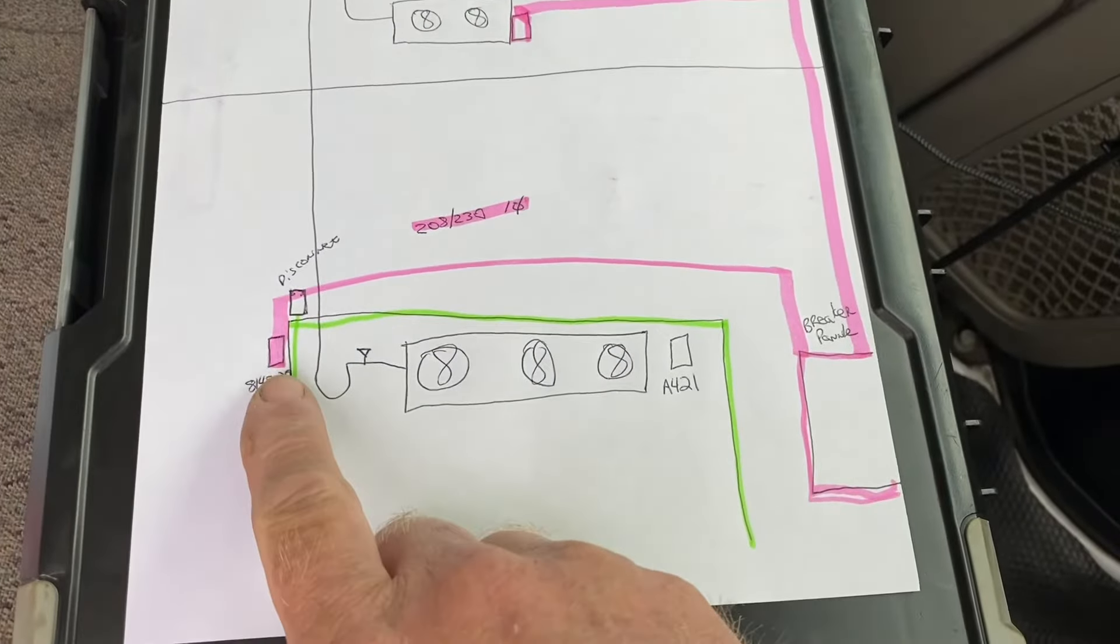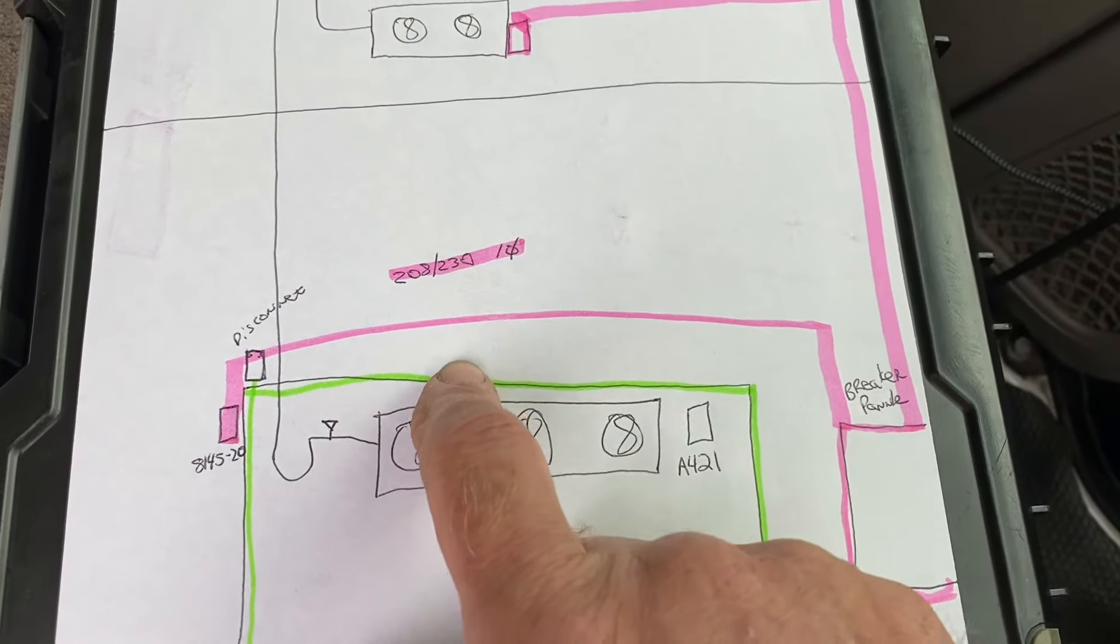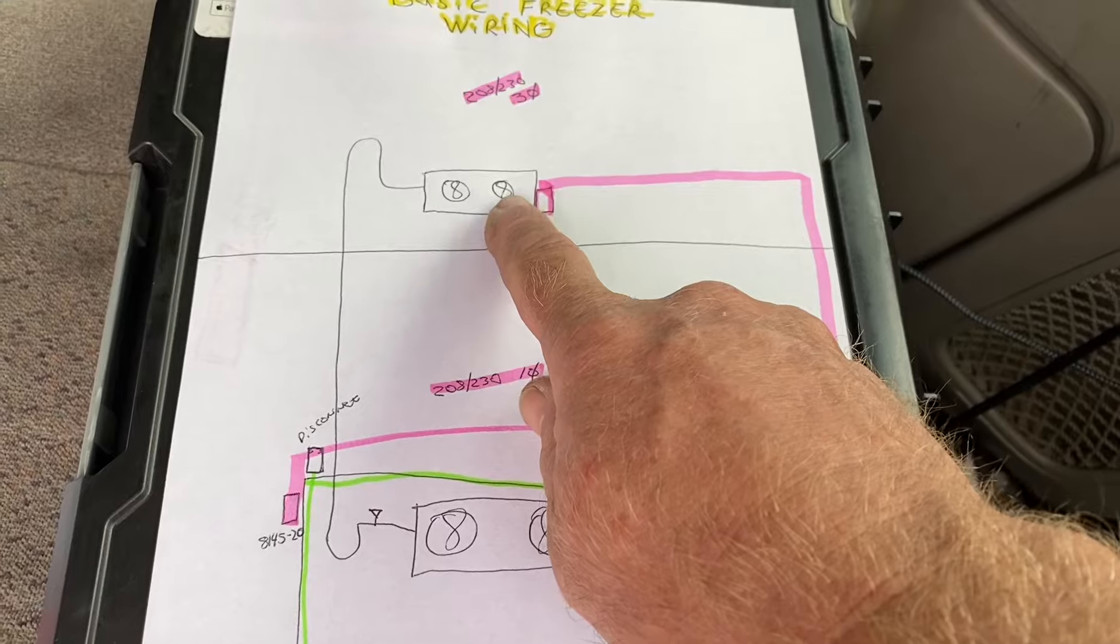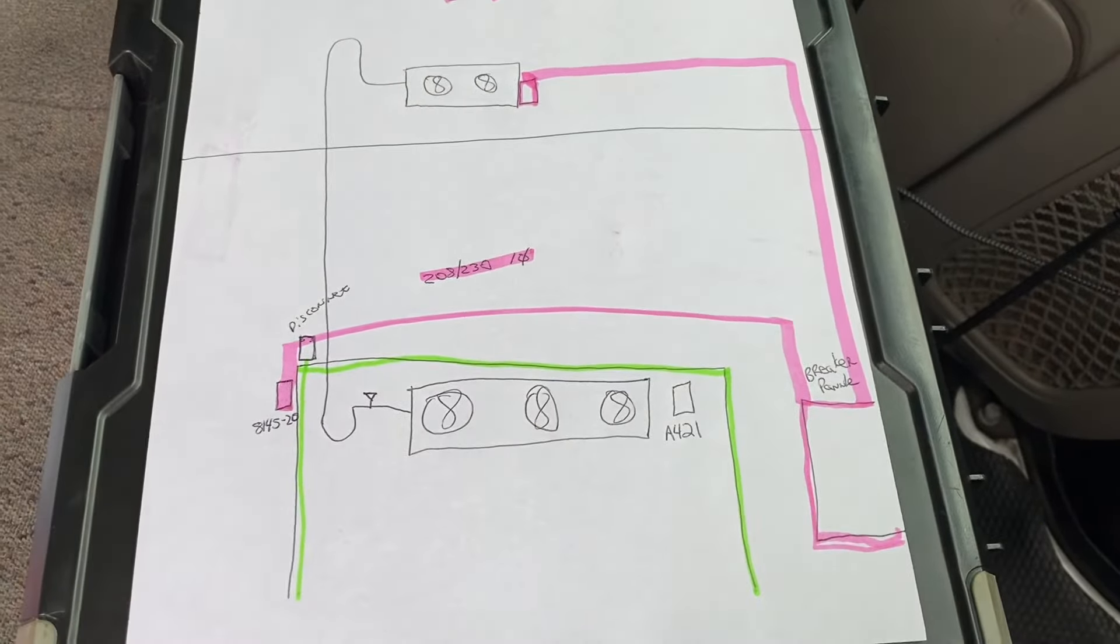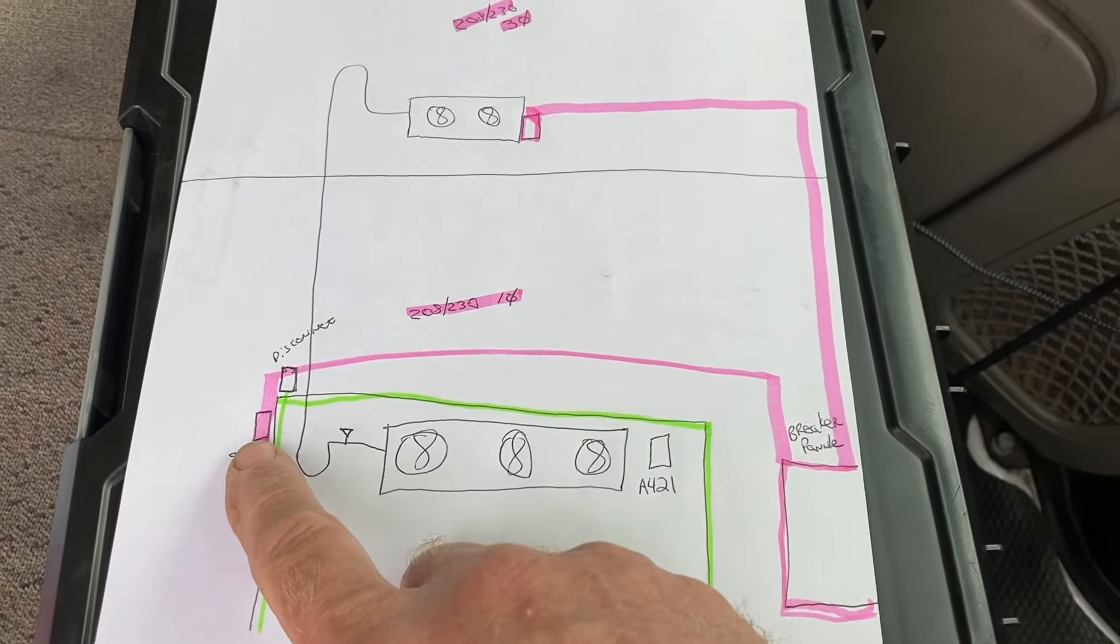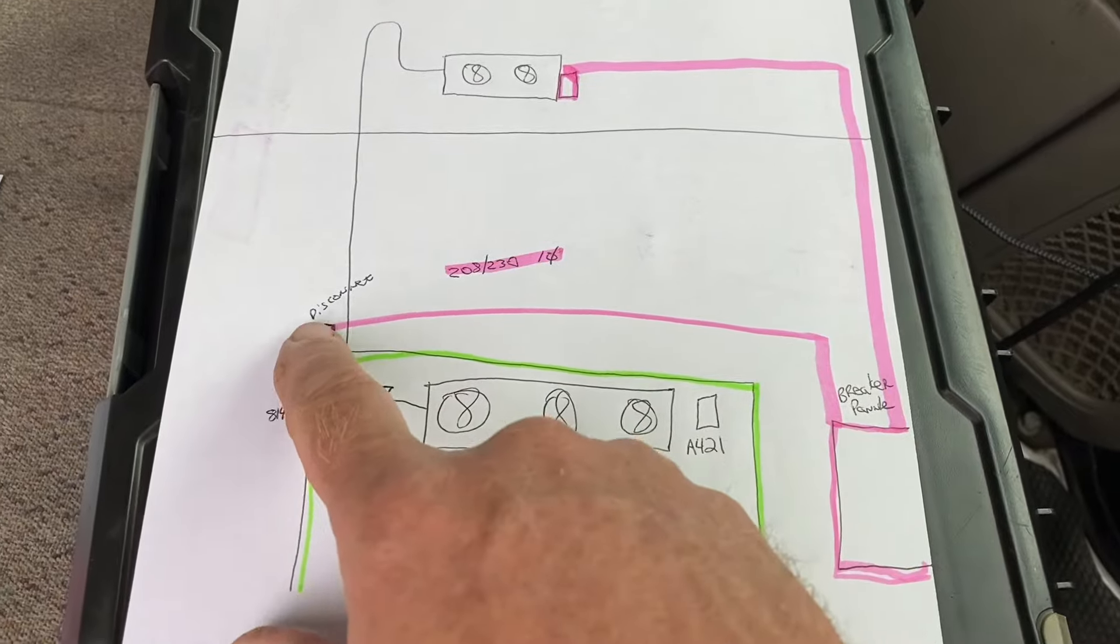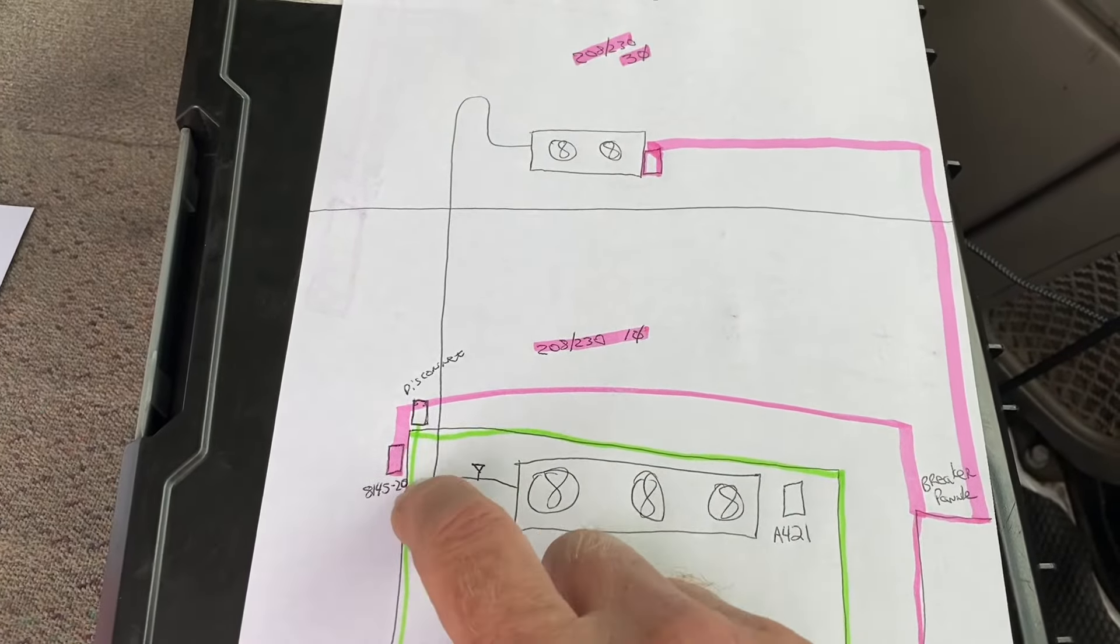Now, sometimes the defrost timer will be mounted at the walk-in box. I've seen them mounted on top of the walk-in boxes, I found them up at the condensing units. But we're just going over the basic wiring for this. So we're going to start right here at this defrost timer, coming from the breaker panel. That's where it starts, and everything below here is going to come through this defrost timer.